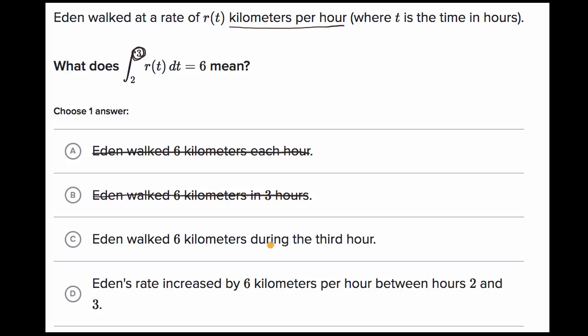Eden walked six kilometers during the third hour. Yes, that's what we've been talking about. From time equal two hours to time equal three hours, Eden walked six kilometers. And you could view that as the third hour, going from time two to time three.